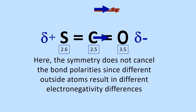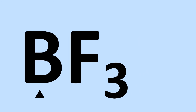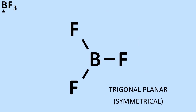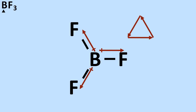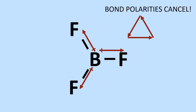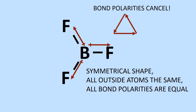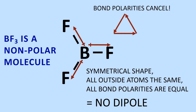Let's do a couple more examples and then put all this information together in a flowchart. Boron trifluoride (BF3), with boron in the center, has a trigonal planar shape which is symmetrical. The fluorines are equidistant from each other at 120 degrees. The electronegativities show a large difference in the boron-fluorine bond, resulting in a large bond polarity in each bond. However, if we add up the bond polarity vectors they add up to zero — the bond polarities cancel due to symmetry, so there is no dipole. Boron trifluoride is a non-polar molecule.